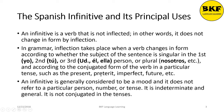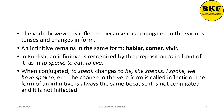An infinitive is generally considered to be a mood, and it does not refer to a particular person, number, or tense. It is indeterminate and general — it is not conjugated in the tenses. The verb, however, is inflected because it is conjugated in the various tenses and changes in form. An infinitive remains in the same form, as in 'hablar,' 'comer,' and 'vivir.' In English, an infinitive is recognized by the preposition 'to' in front of it, as in 'to speak,' 'to eat,' or 'to live.' This form of an infinitive is always the same because it is not conjugated and not inflected.